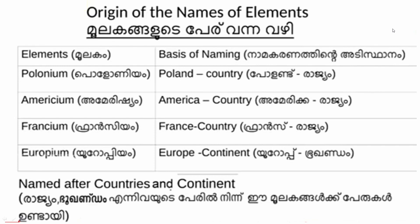We will study the two main points. Elements have three bases of naming. For example, Polonium is named after Poland, which is a country. Americium, Francium is named after France, which is a country. Europium is named after Europe, which is a continent. These elements are named after countries and continents.